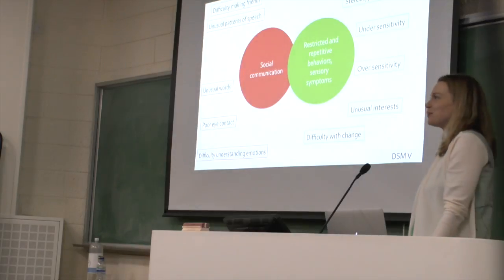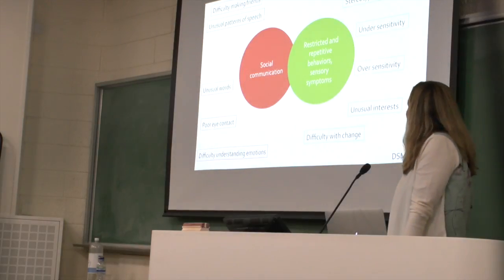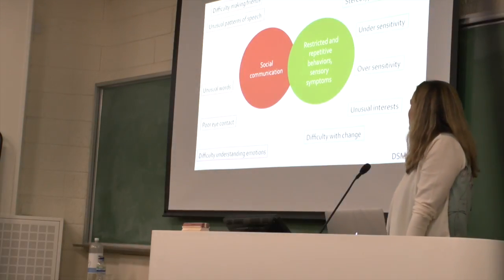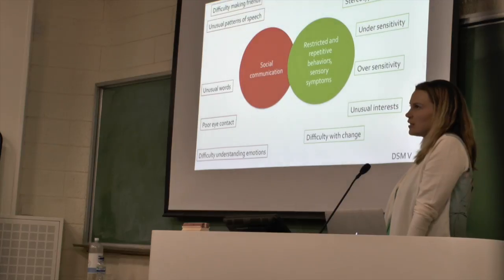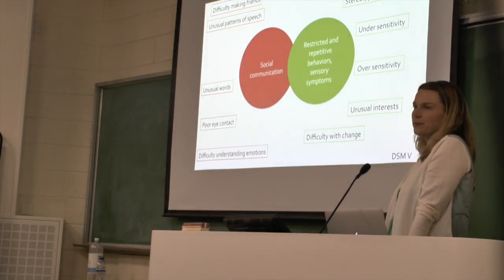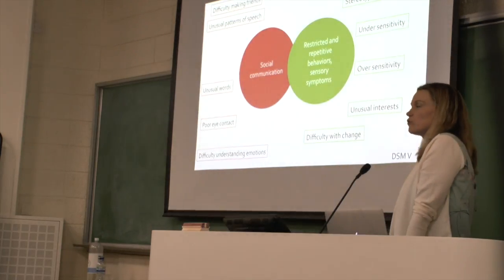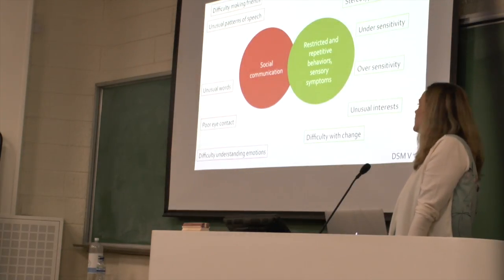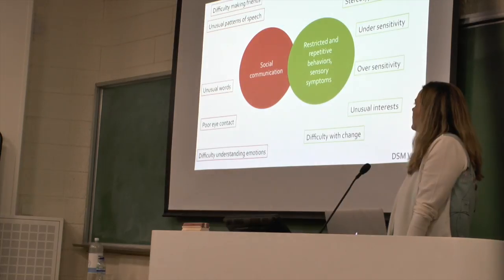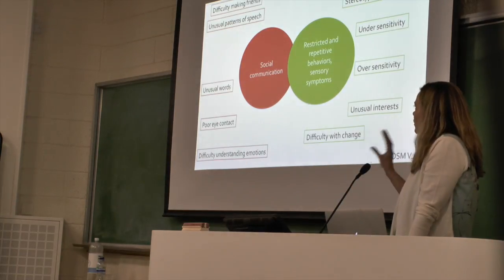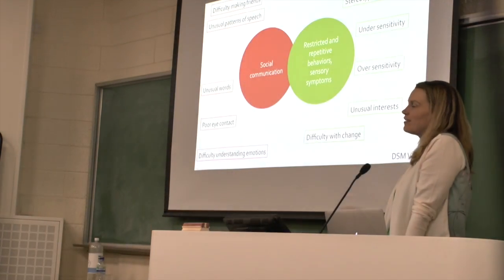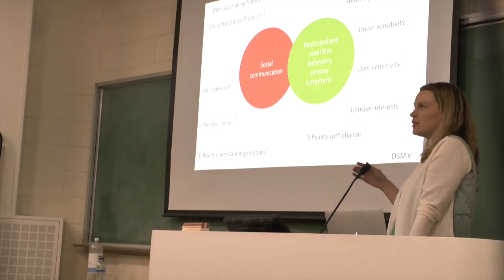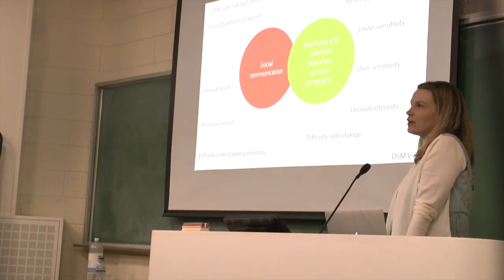The symptoms of autism, as laid out in the latest US Diagnostic Manual, include difficulties with social communication and restricted and repetitive behaviours. We know a lot about these in children and adults with autism, but we're really interested in how these difficulties emerge in very early development.